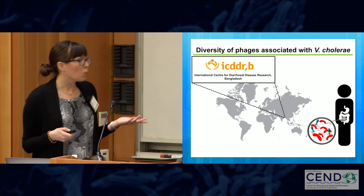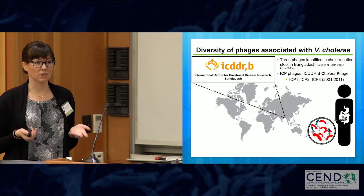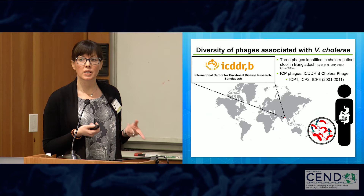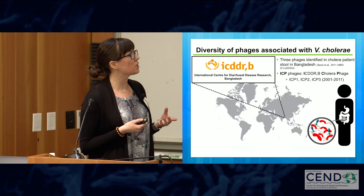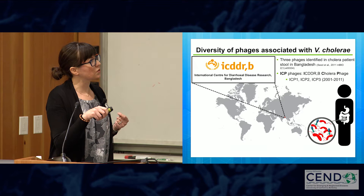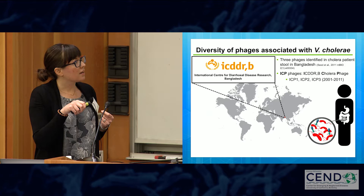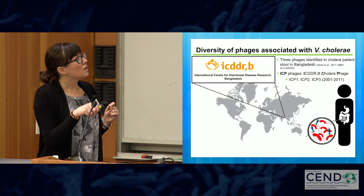What we found was surprising: over a 10-year period, we only found three unique phages in those stool samples. Despite looking at samples collected over a decade, we didn't find a huge diversity of phages. I named these phages for the hospital: ICP-1, ICP-2, and ICP-3. These are genetically unrelated phages. We have multiple isolates of each collected over time, so we can track the evolution of each individual phage.